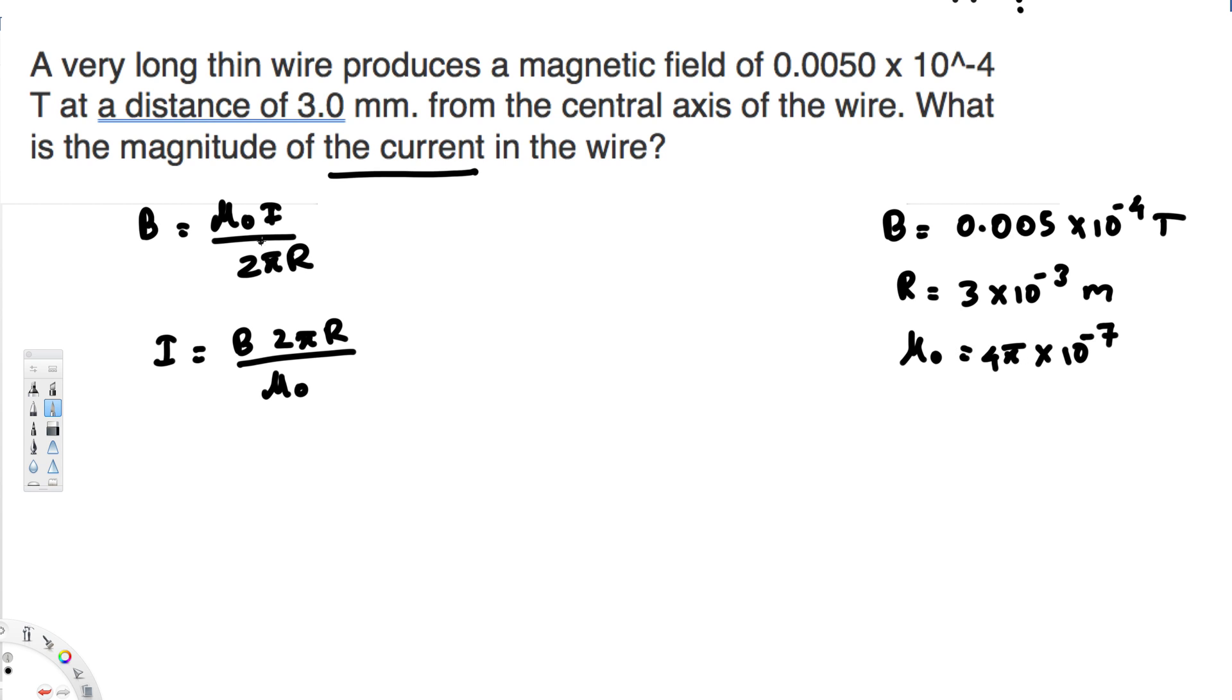Let's look at the unit for μ₀. The unit is going to be tesla times meter divided by ampere, so tesla·meter per ampere. Because if you rearrange this equation for μ₀, B is tesla, times R is meter, divided by current that is ampere. So tesla·meter per ampere is going to be the unit.